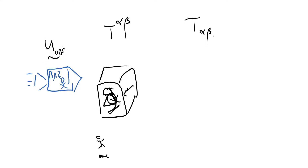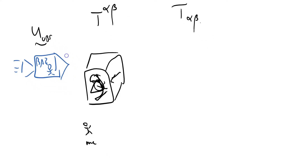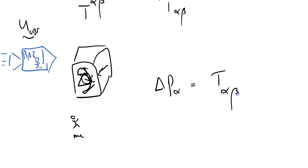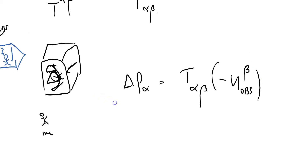Baz is cruising along with velocity u_obs — that's his four-velocity — and I'm going to ask: what does Baz see? Baz sees the amount of momentum inside there — the full momentum, with a downstairs index. That's going to equal T_αβ times minus u_obs^β times the size of the control volume. This is just a special case of the definition of the stress-energy tensor.